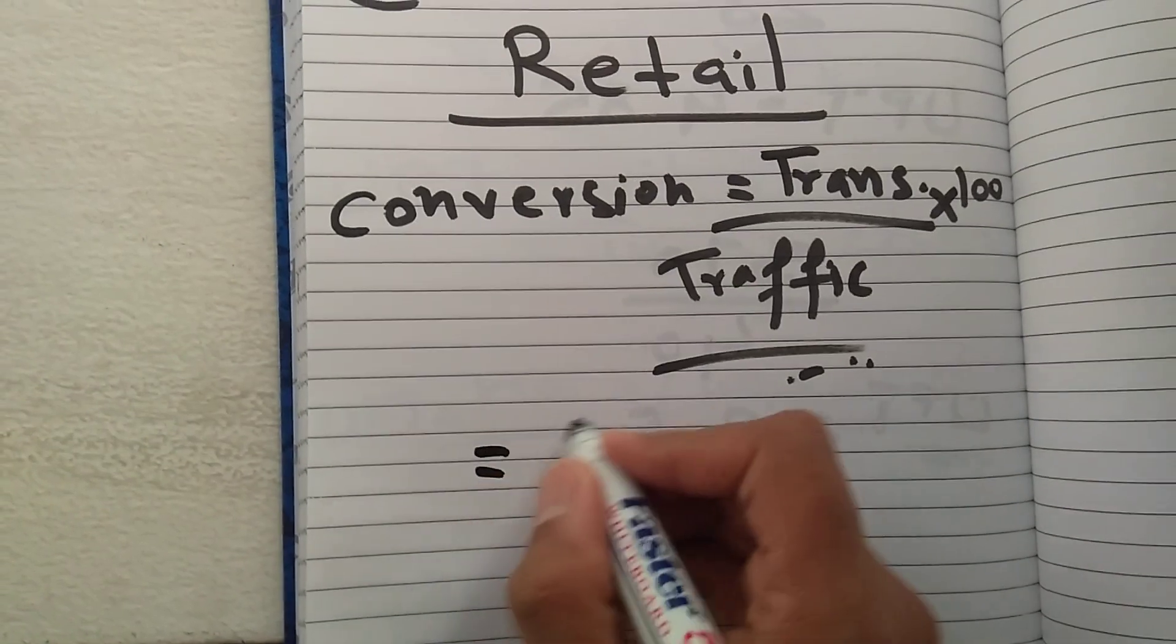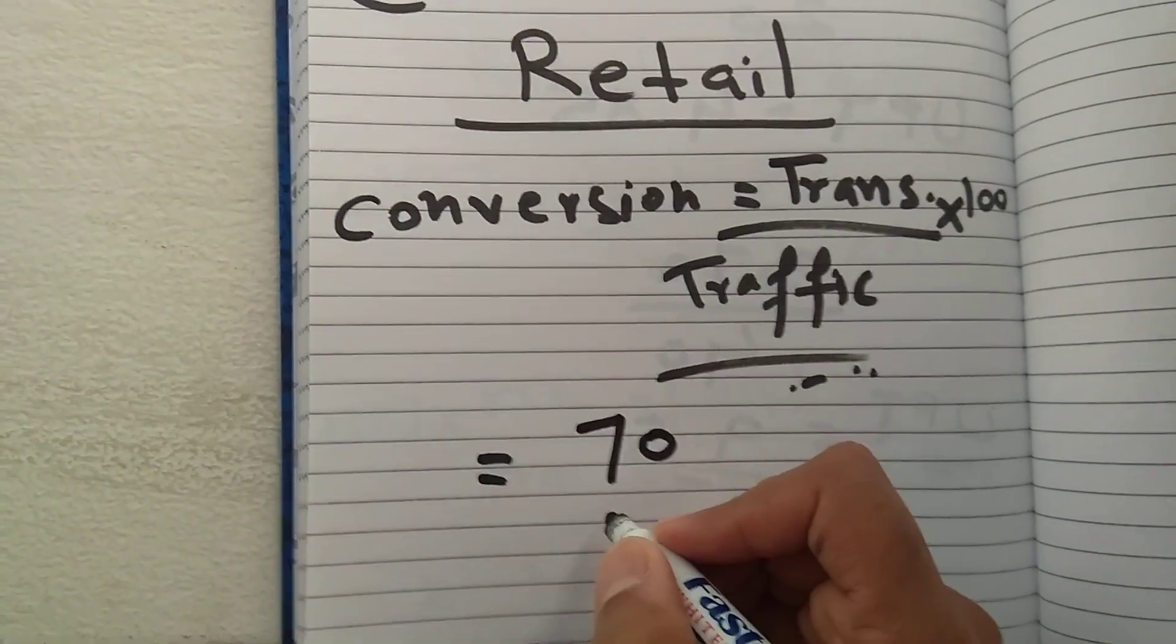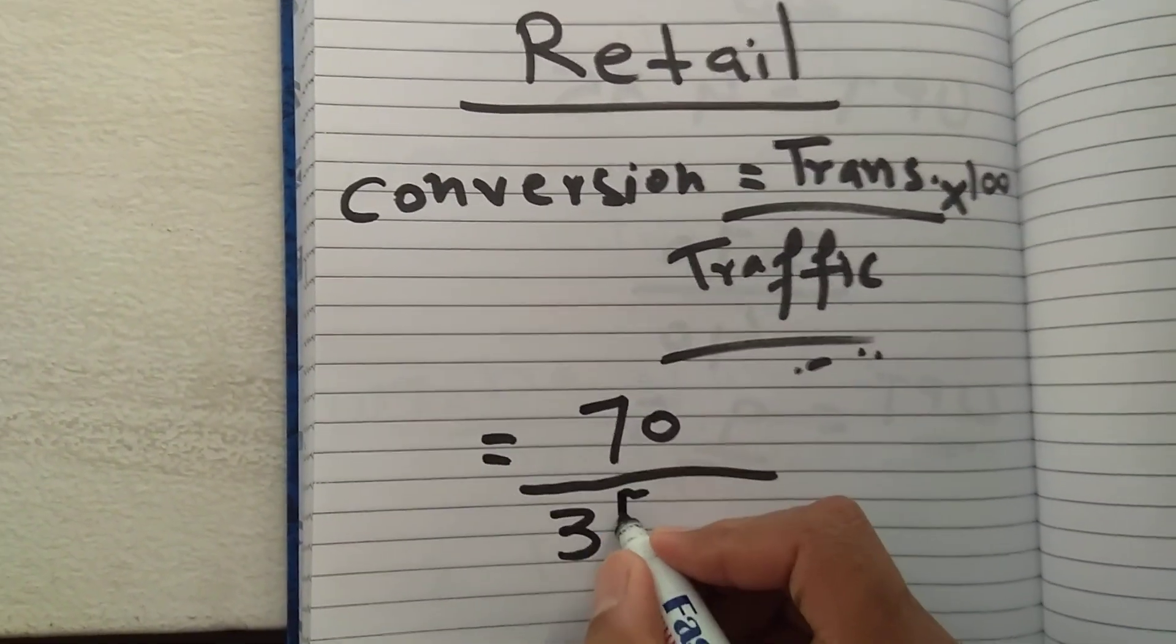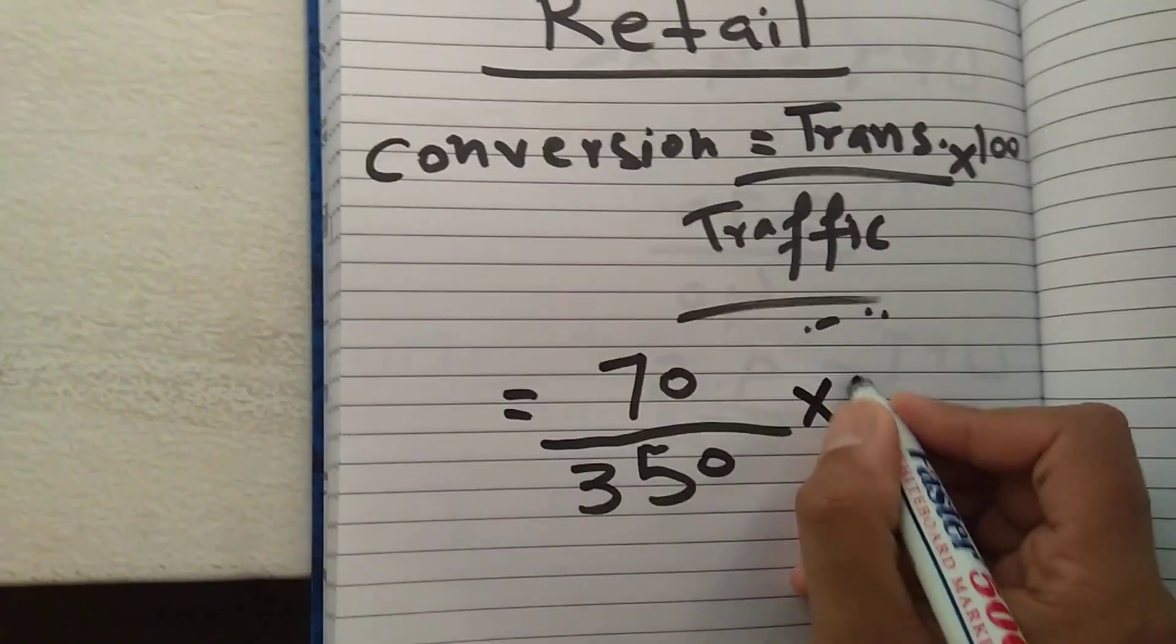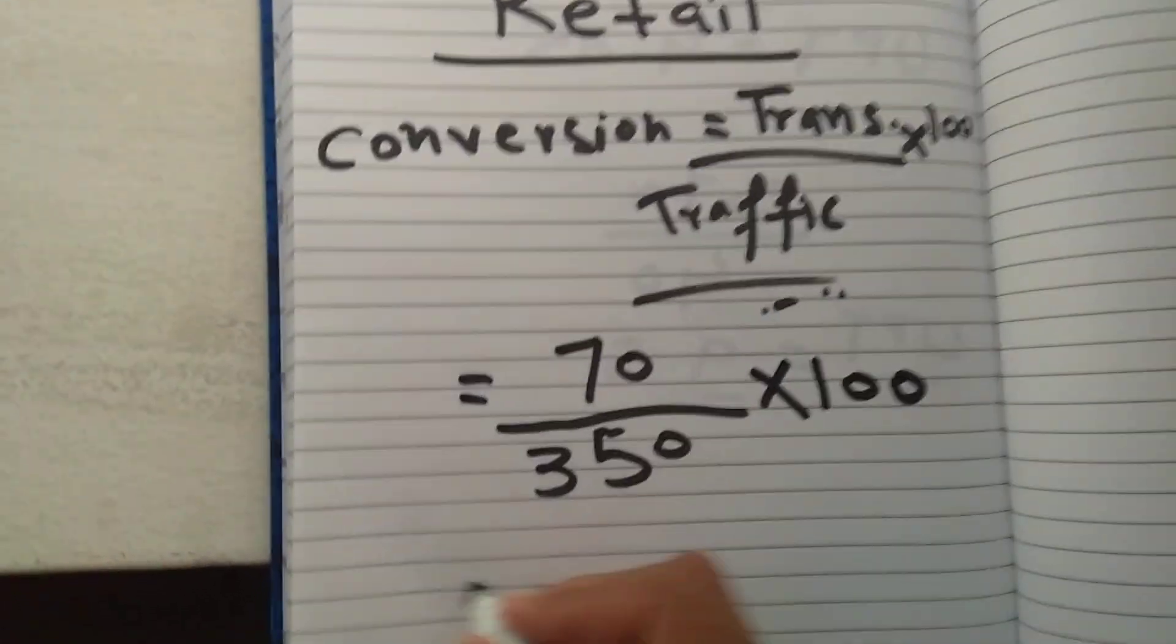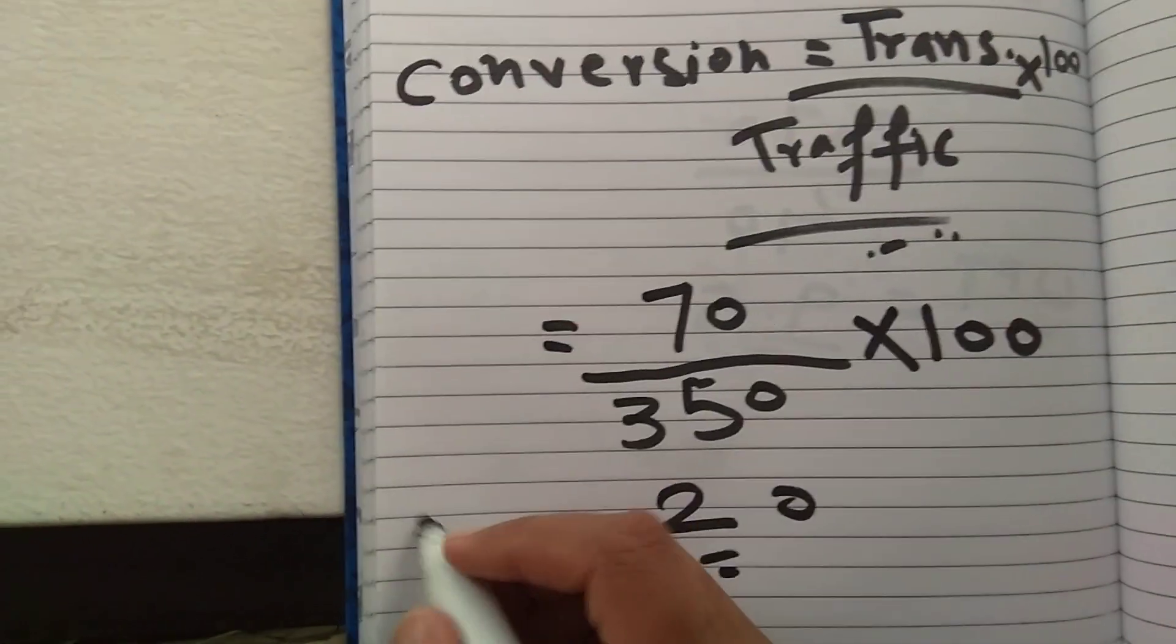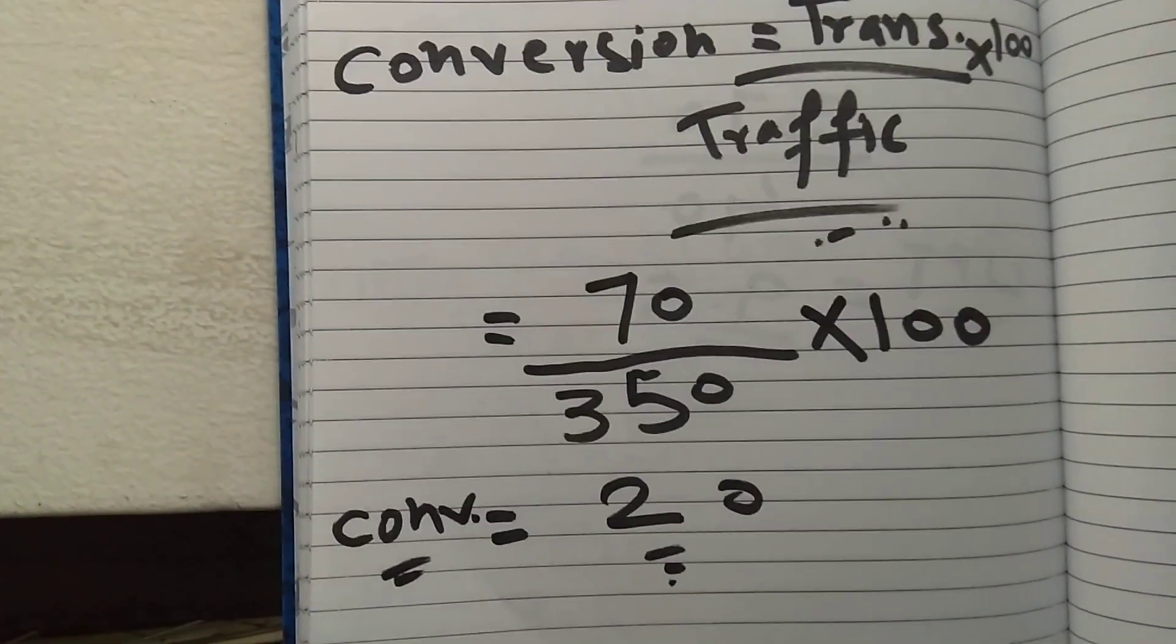For example, let's say you make 70 transactions in a day and the total number of people entering that shop or outlet is 350. So 70 divided by 350, and then you have to multiply the total with 100. The answer is 20, so we can say the conversion for that day is 20.